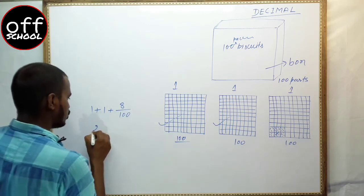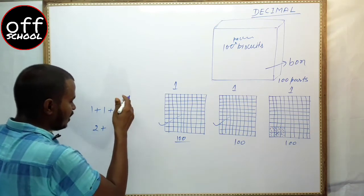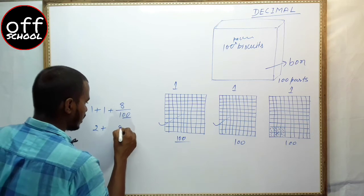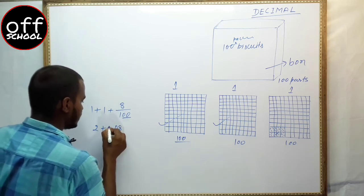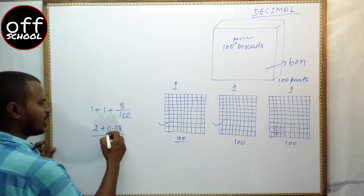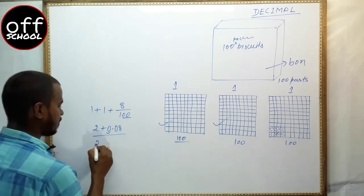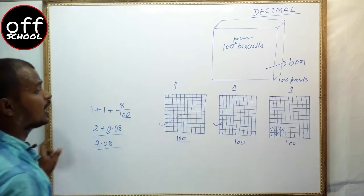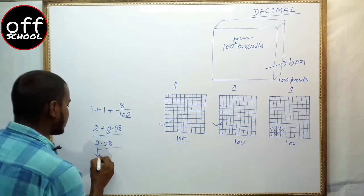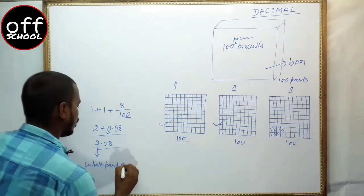So this is one plus one, which is two whole parts, and then 8 out of 100 as the decimal part. The decimal form: you have two whole digits, and the denominator has 2 zeros. So you write 2, then put the decimal point, then write 0 and 8. Combined, this gives 2.08. So the total of the pieces is represented as 2.08, where 2 is the whole part and .08 is the decimal part.